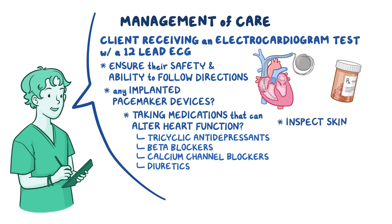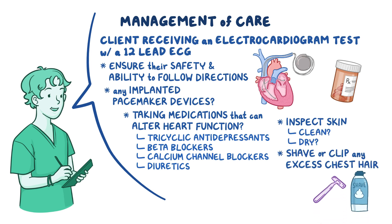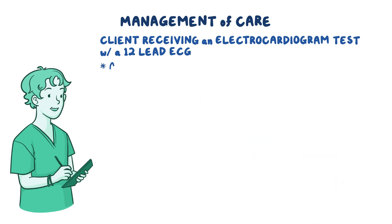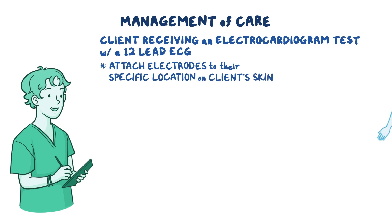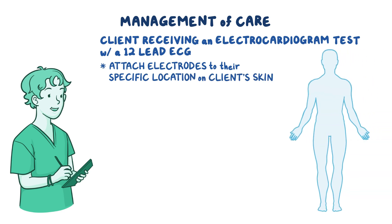Next, inspect the skin, making sure it is clean and dry, and shave or clip any excess chest hair, which would interfere with the test. Then attach the electrodes to their specific locations on your client's skin. Place the RA lead on the right arm or shoulder and the LA lead on the left arm or shoulder. The RL goes on the right leg, while the LL is placed on the left leg.